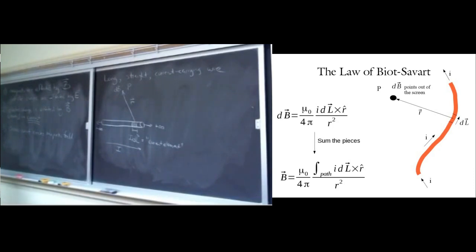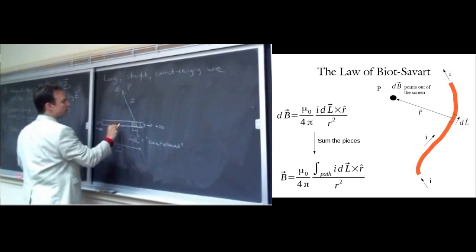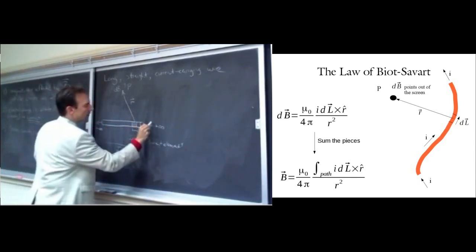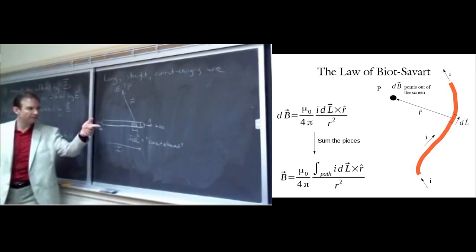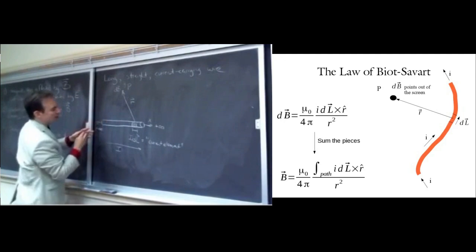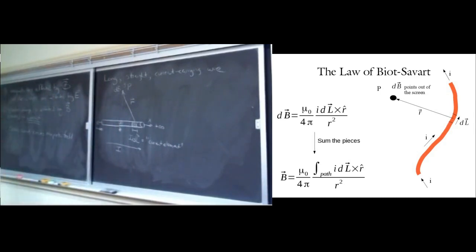Now let's do some math. We need to represent r̂, r vector, and dL in terms of coordinates. For I dL vector: the current points in the positive î direction by construction, and dl is just a little piece of the x-axis, so dl = dx. We'll integrate over dx from negative infinity to positive infinity — our limits of integration are already determined. That's as far as we can go with dL — in a problem you'd be given the current I.